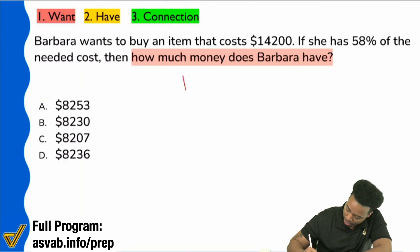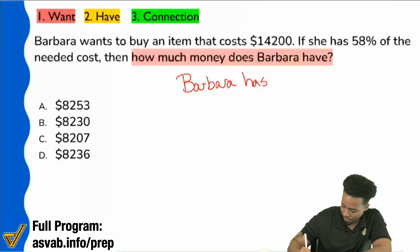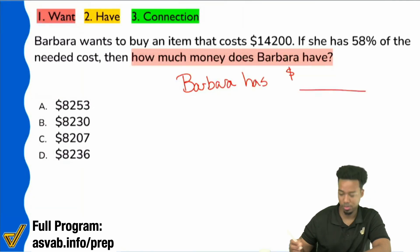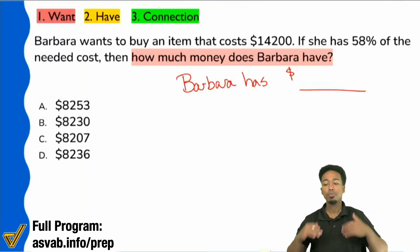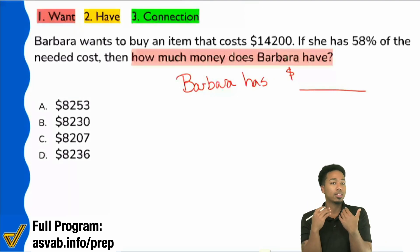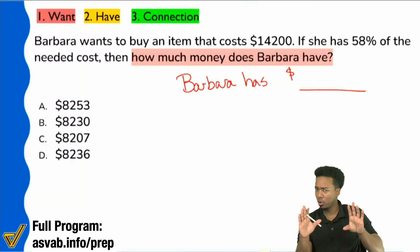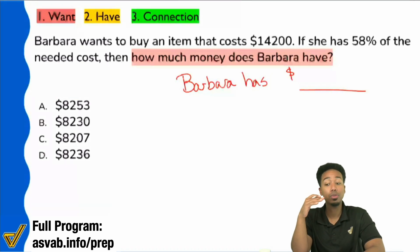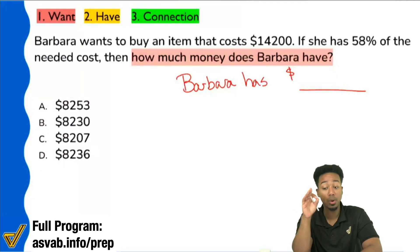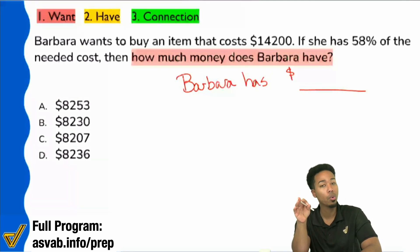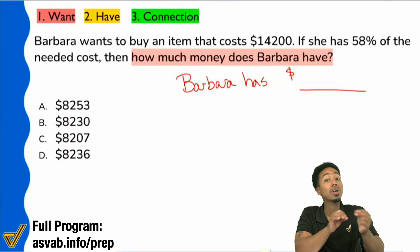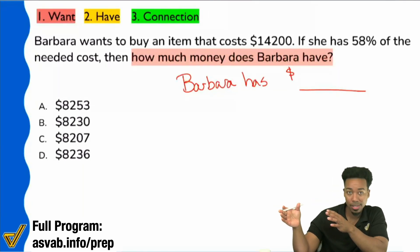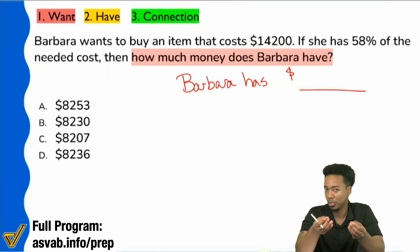Write that down. So Barbara has — and then we'll just say some money. I'm going to leave a blank, but I'm going to keep that in my head or on paper, your choice. The purpose of just going through that is to help you solidify — oh, this is the piece of information I'm going for. Let's now figure out how to work what we have to find this piece of information.